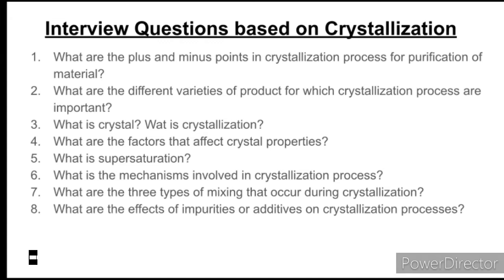The next question is: what is a crystal and what is crystallization? A crystal may be defined as a solid composed of atoms arranged in an orderly, repetitive array. Crystals are composed of atoms in an orderly and repetitive arrangement. Crystals are high purity products with consistent shape and size, good appearance, high bulk density, and good handling characteristics.